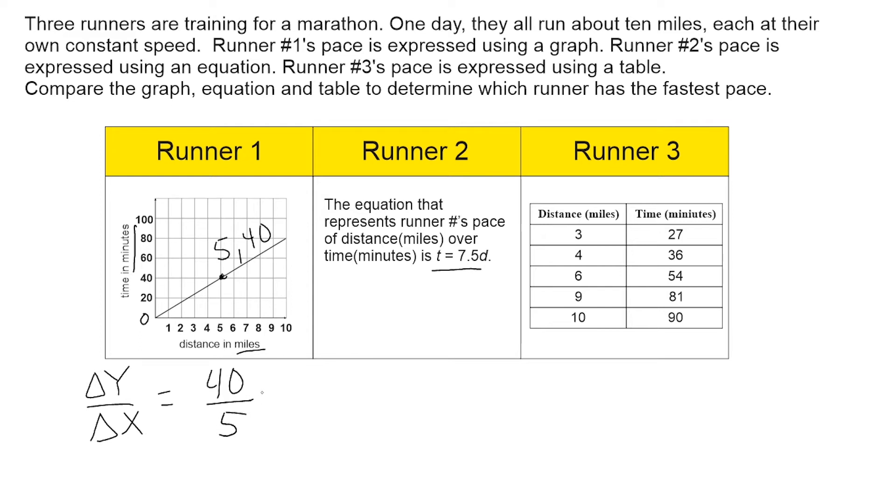And that ends up giving us eight minutes to run one mile. So the unit rate that this runner is running is one mile every eight minutes, or it takes him or her eight minutes to run one mile.